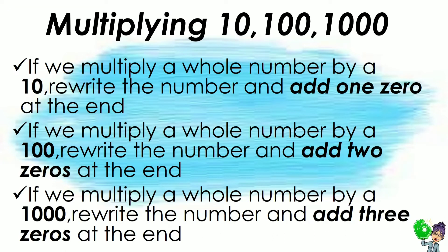Now let us learn how to multiply numbers by 10, by 100, and by 1,000. If we multiply a whole number by 10, rewrite the number and add 1 zero at the end. If we multiply by 1,000, rewrite the number and add 3 zeros at the end.